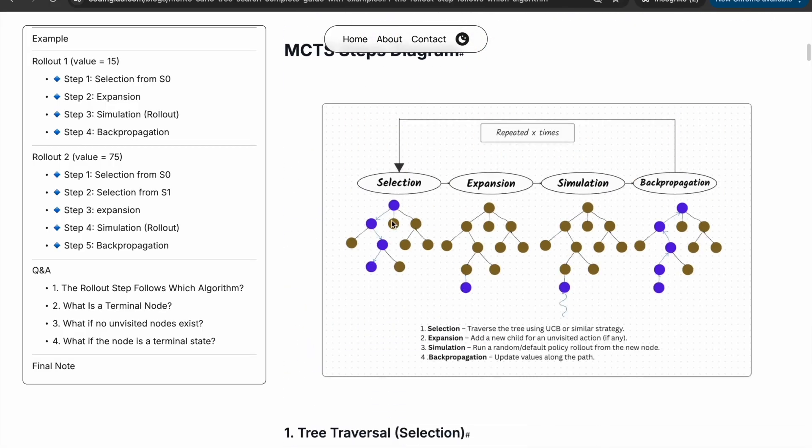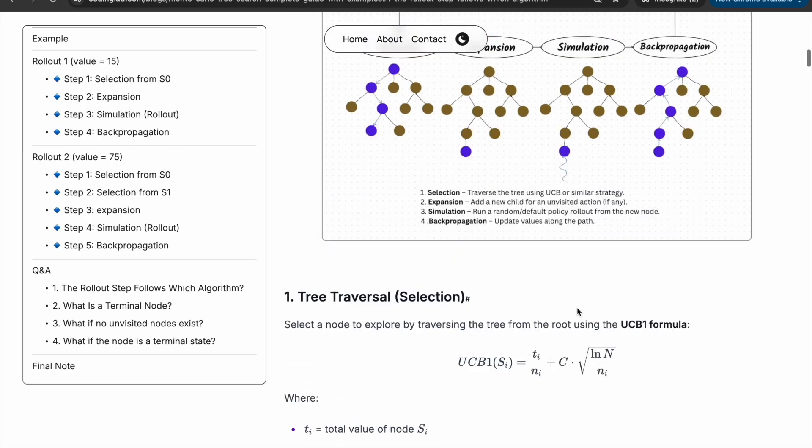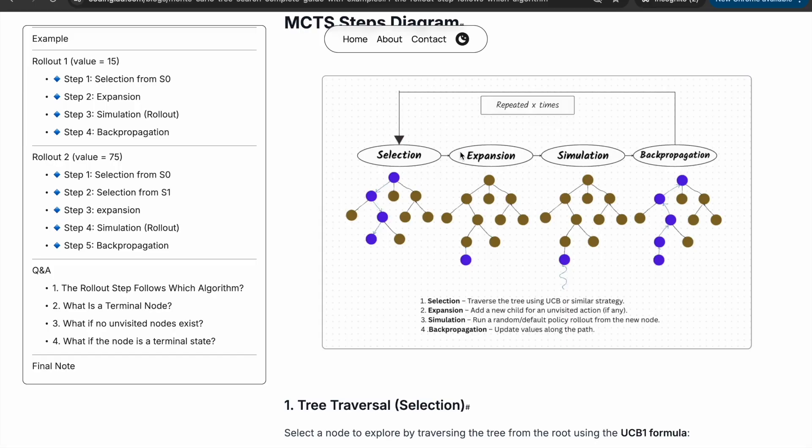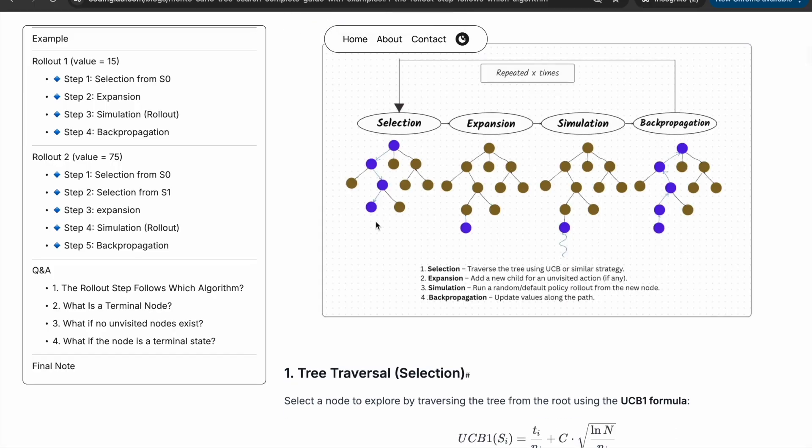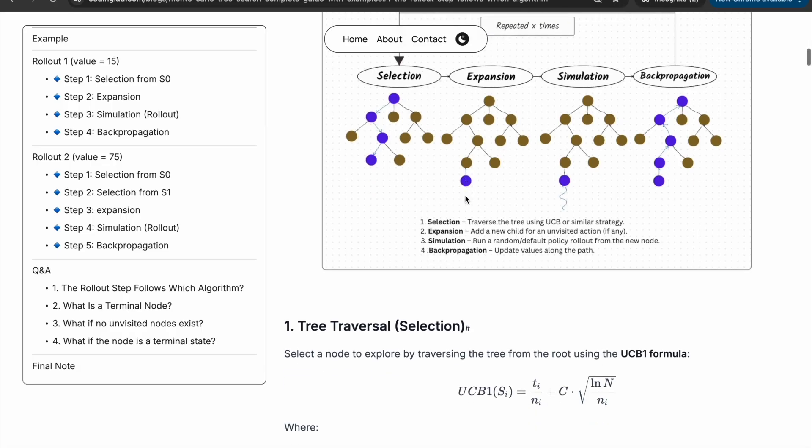So basically, we are selecting nodes one by one using the UCB1 formula in the selection step. Then comes expansion. Once we reach a node that has unvisited children, we expand it. Suppose this one has unvisited children, then we expand this node. Expansion means we are adding a new node to represent unexplored game states or actions.